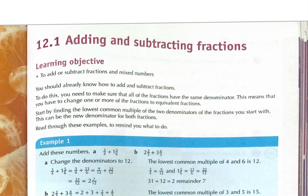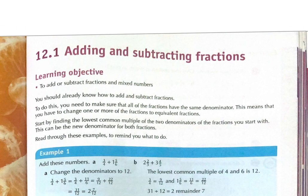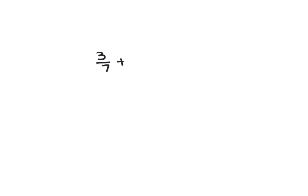Today we'll learn how to add and subtract two fractions, two mixed numbers, or a mixed number and a fraction. You studied that before, so I'll check if you understand. If we have two fractions — 3 over 7 plus 1 over 7 — the answer is 4 over 7.